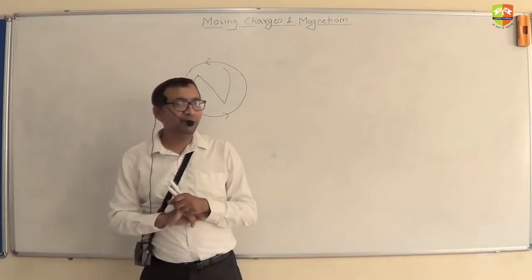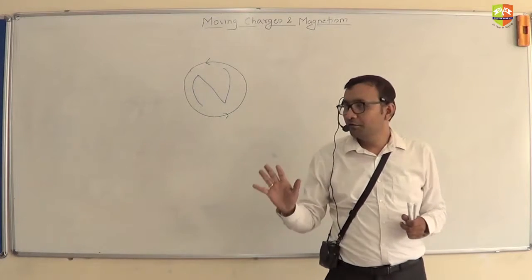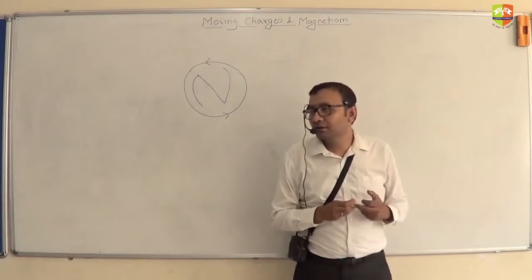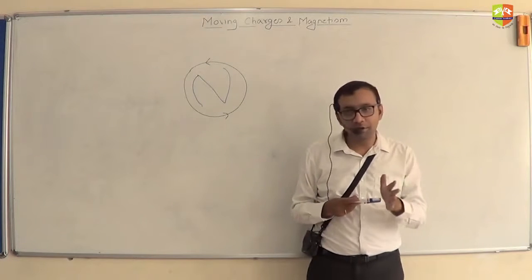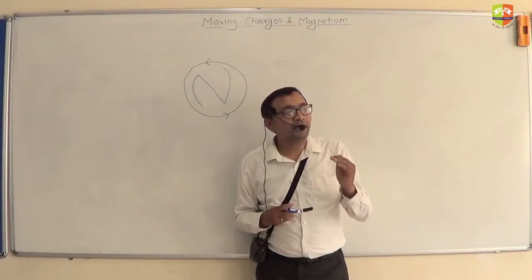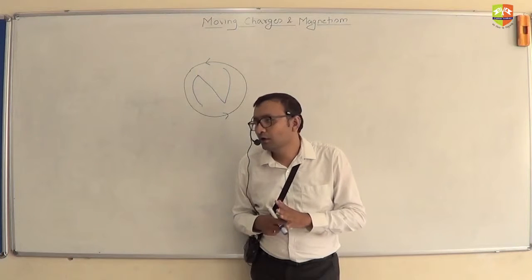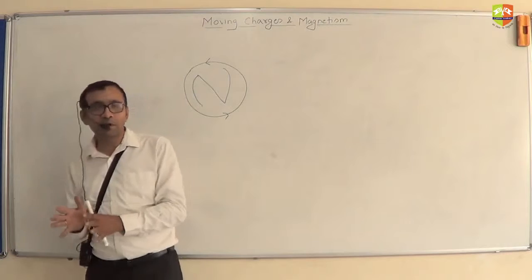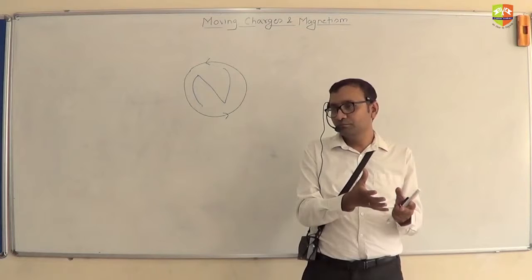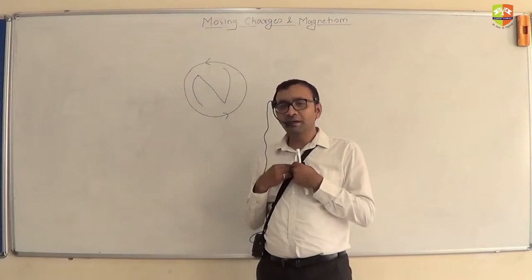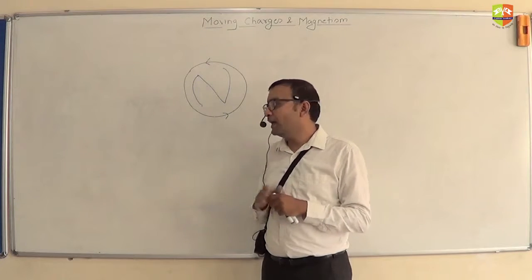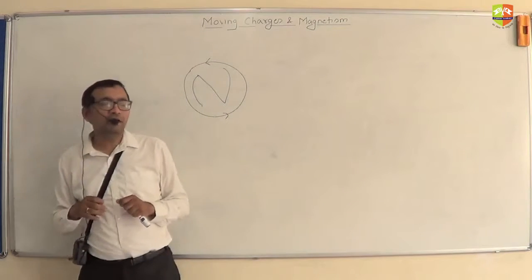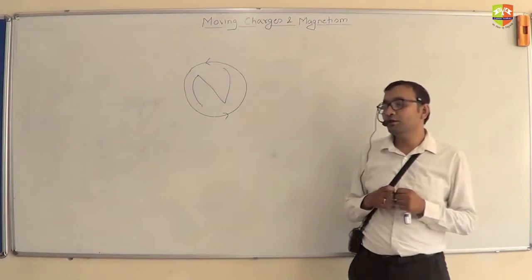So dipole moment is the basic element of the magnetic field. But we are not starting this chapter with dipole moment — we are starting it with the magnetic field due to a current element. The current element is not the basic cause of magnetism; the basic cause is the dipole moment. However, it is very easy to identify and measure current, and it is very difficult to calculate dipole moment directly.